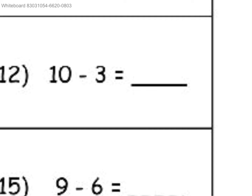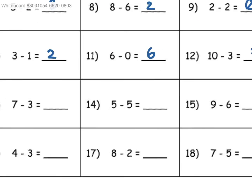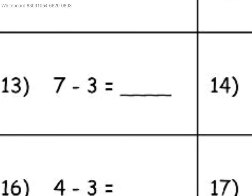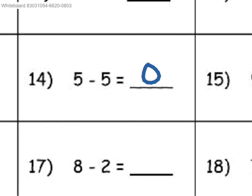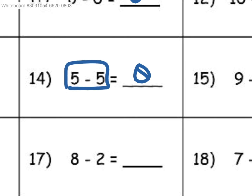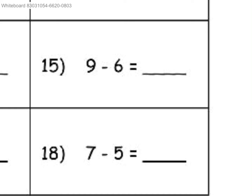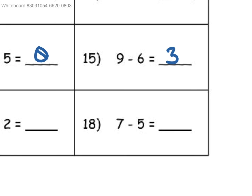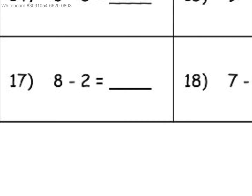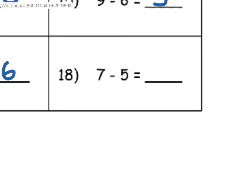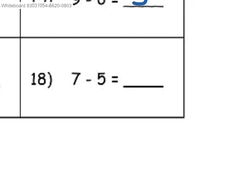10, take away 3, which would leave you with 7. 7, take away 3, which would be 4. 5, take away 5, which would be 0, since it's the same number being subtracted by itself. 9, take away 6, would be 3. 4 minus 3 would be 1. 8, take away 2, would be 6. And then 7 minus 5 would be 2.